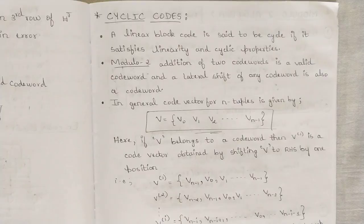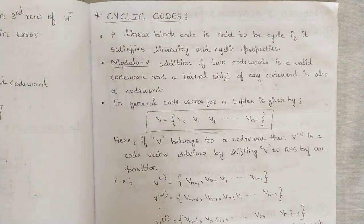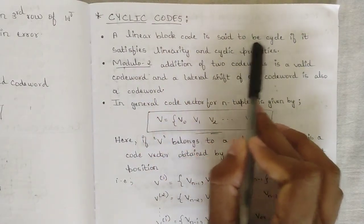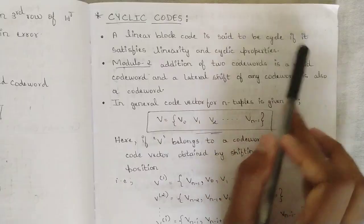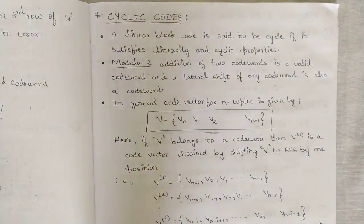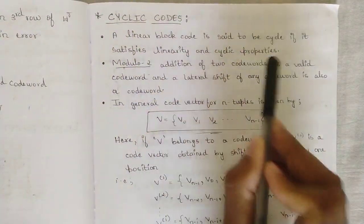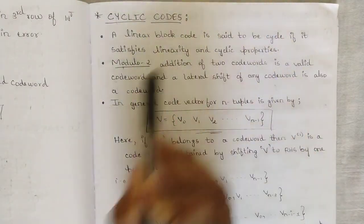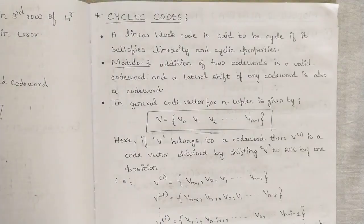I'm going to be discussing all of them in the upcoming two videos on cyclic codes, so please don't skip these two videos — it is very important. A linear block code is said to be cyclic if it satisfies two main properties: linearity property and cyclic property. The cyclic property is the loop property where patterns repeat in a cycle.